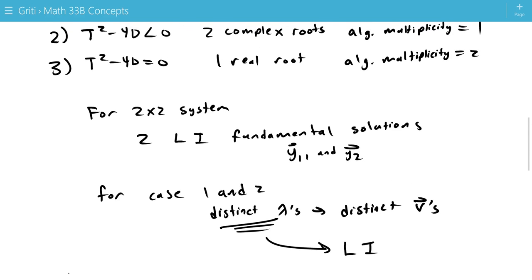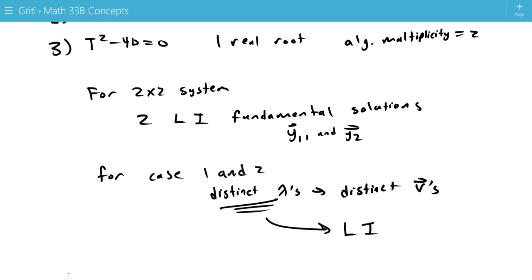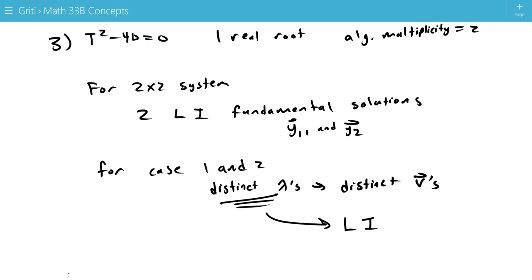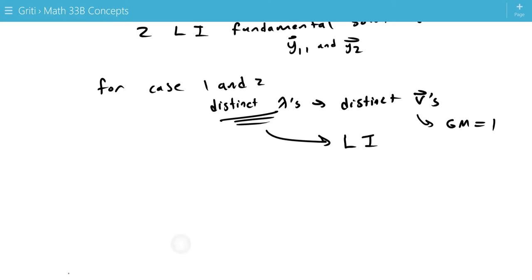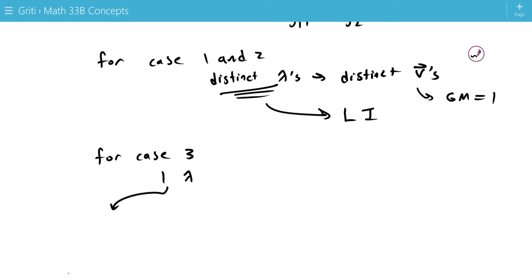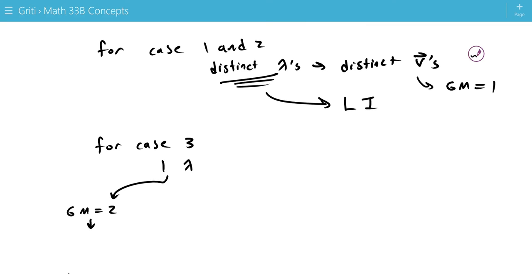For the third case, that is not always going to be true. For distinct eigenvalues, we're always guaranteed that each eigenvalue will have a geometric multiplicity of 1. So, every eigenvalue has at least a geometric multiplicity of 1. That means its eigenvectors span a space of dimension 1. But, for case 3, we only have one eigenvalue. So, there are two cases. That is, we could get geometric multiplicity of 2, which means we have two linearly independent vectors.